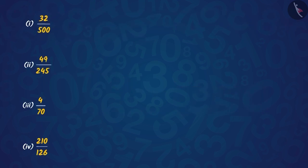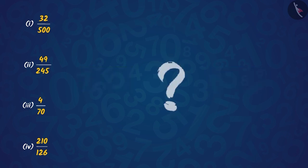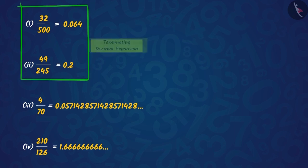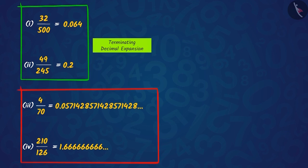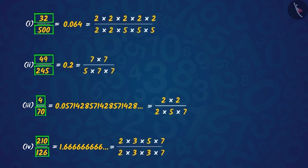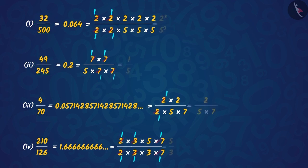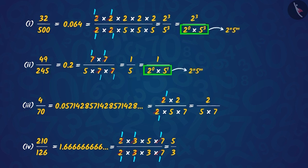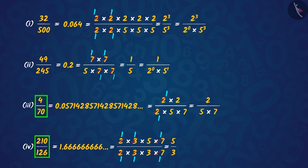Now, if we look at these rational numbers, can you guess whether their decimal expansion will be terminating or non-terminating? If we solve by division method, we understand that the decimal expansion of the first and second rational numbers is terminating, and the third and fourth is non-terminating. Taking the numerator and denominator in the form of prime factors, you will see that the denominator of terminating rational numbers can be written as 2 raised to n multiplied by 5 raised to m, while the denominator of non-terminating rational numbers cannot be written in this format.